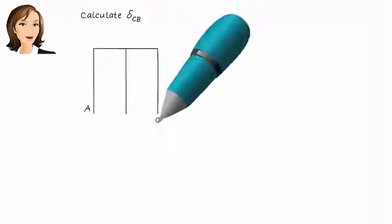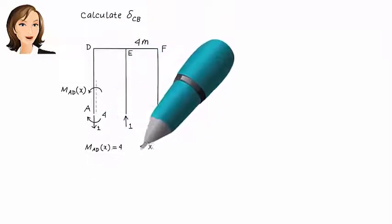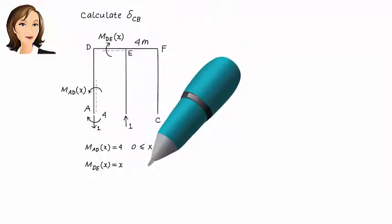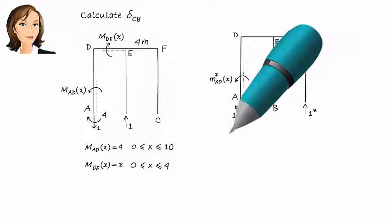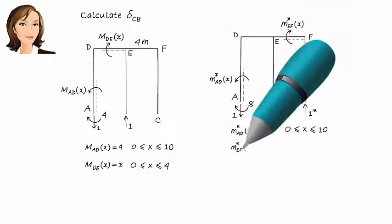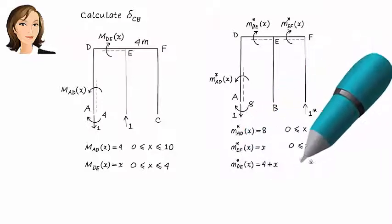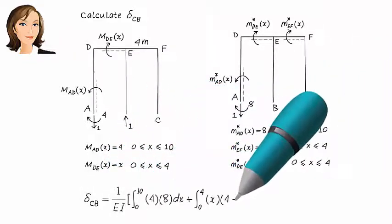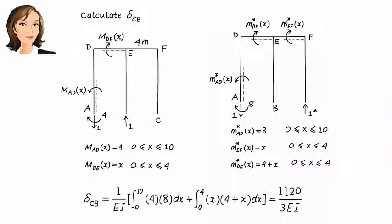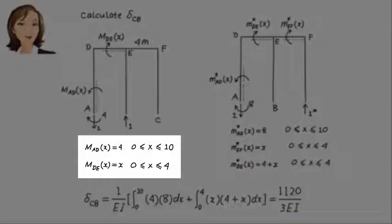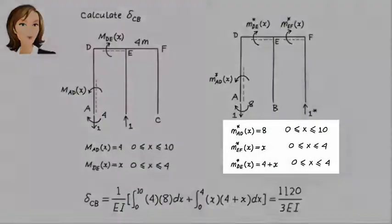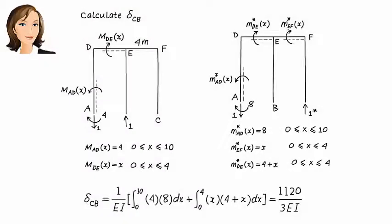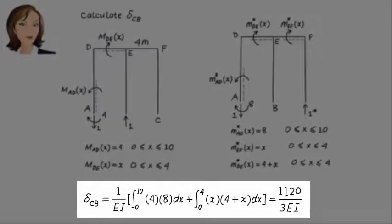Next, we need to get delta CB — the vertical displacement at C due to a vertical unit load placed at B. In this case, M and M star are not the same since the real load and the virtual load are applied at different locations. Here are the non-zero M equations, here are the non-zero M star equations, and here is the integral of M times M star.